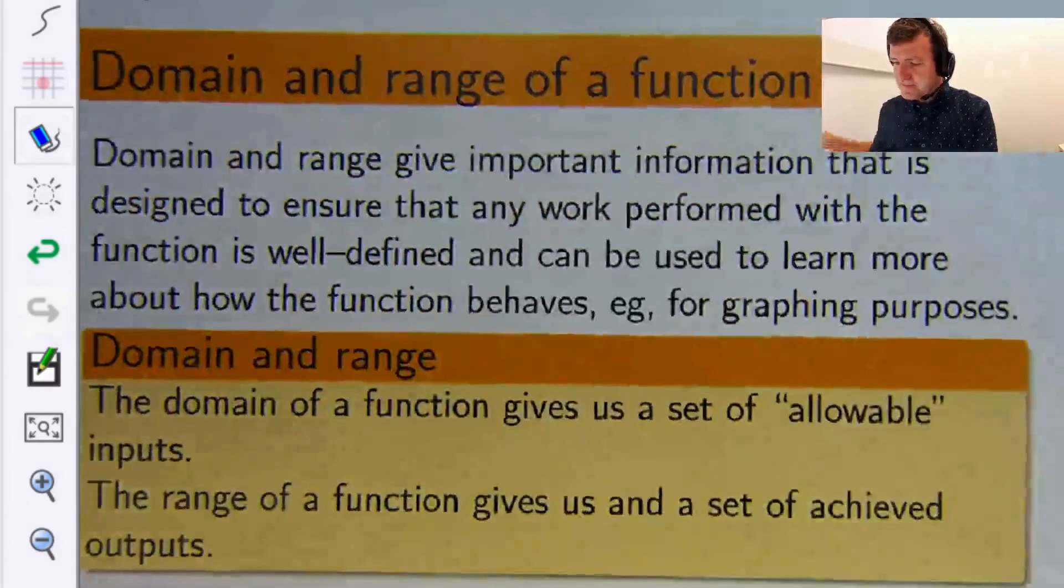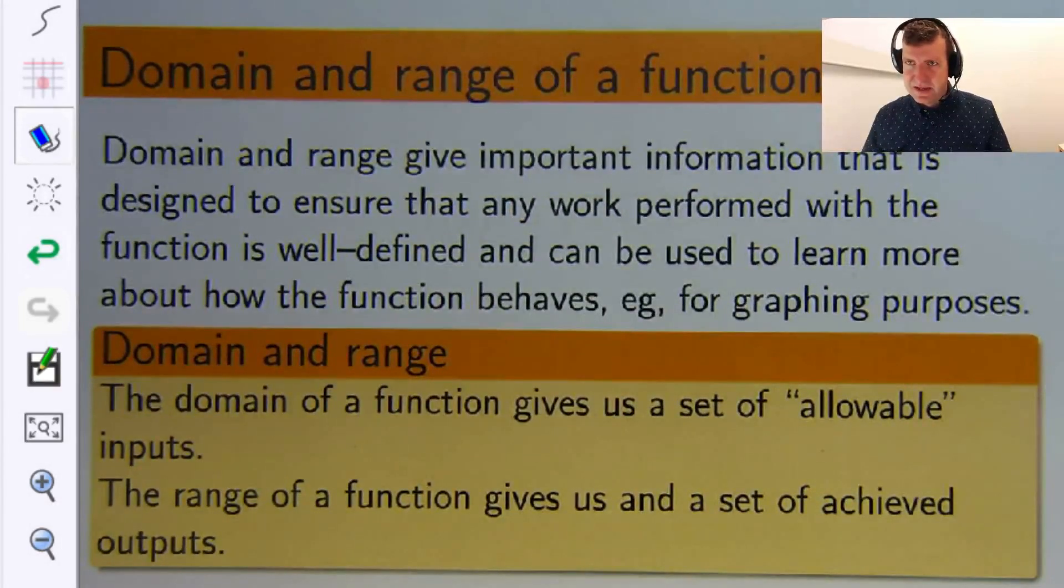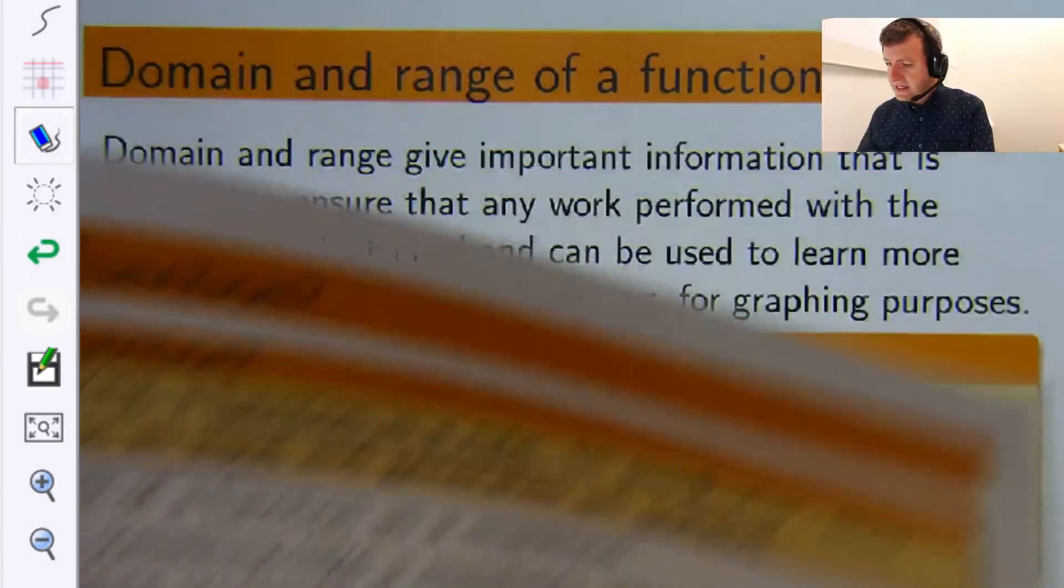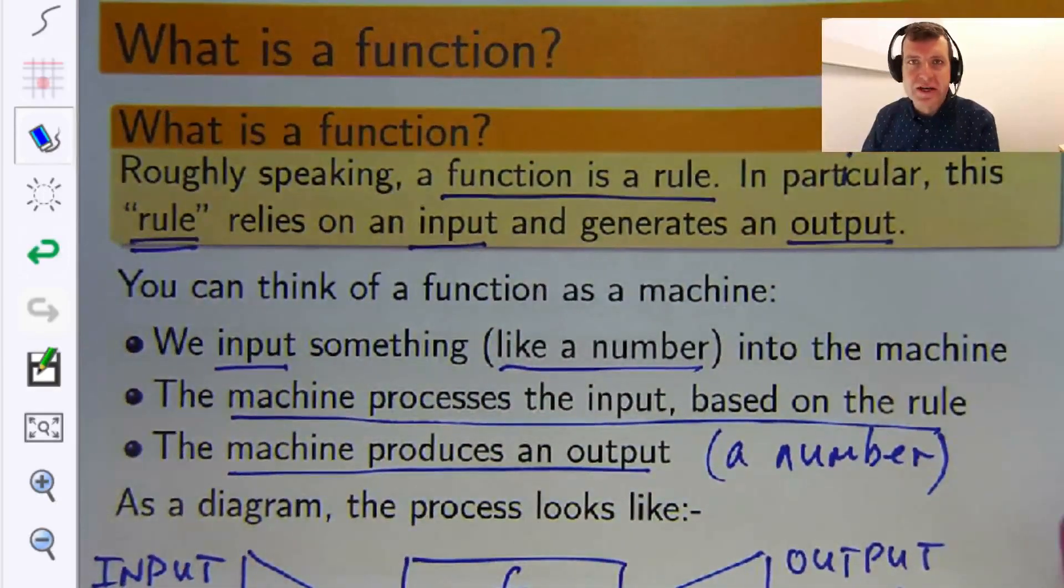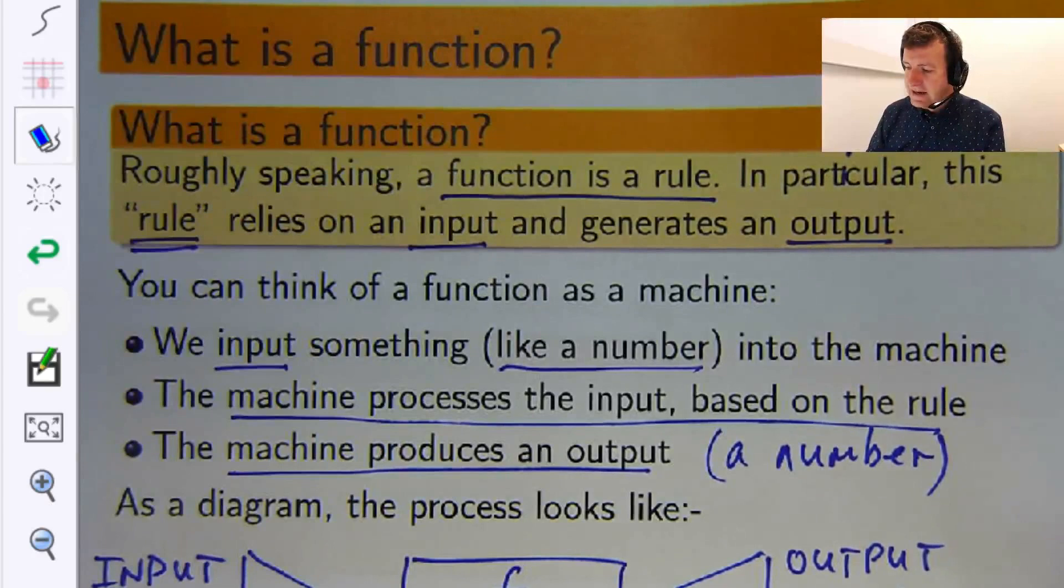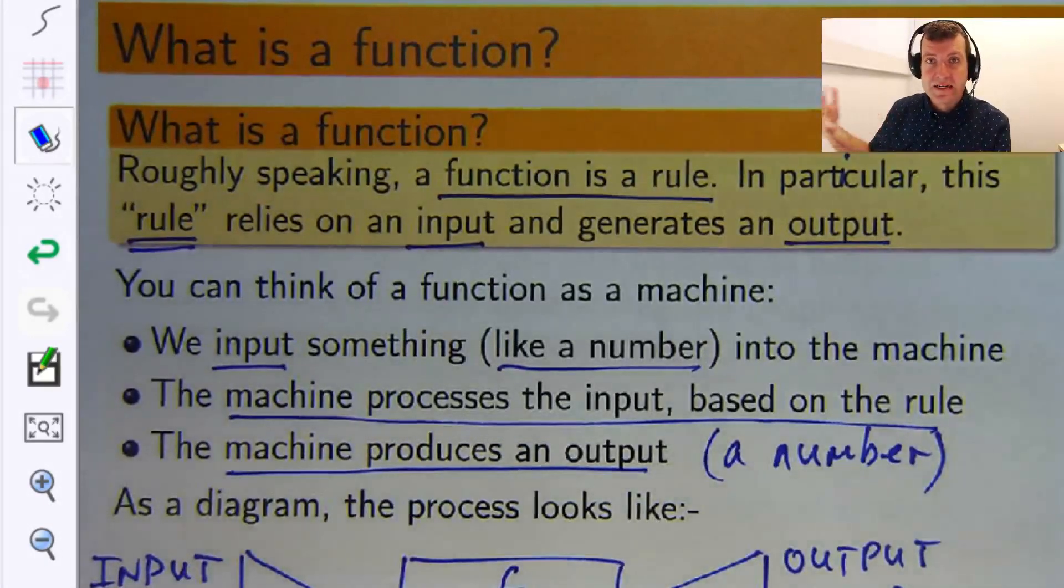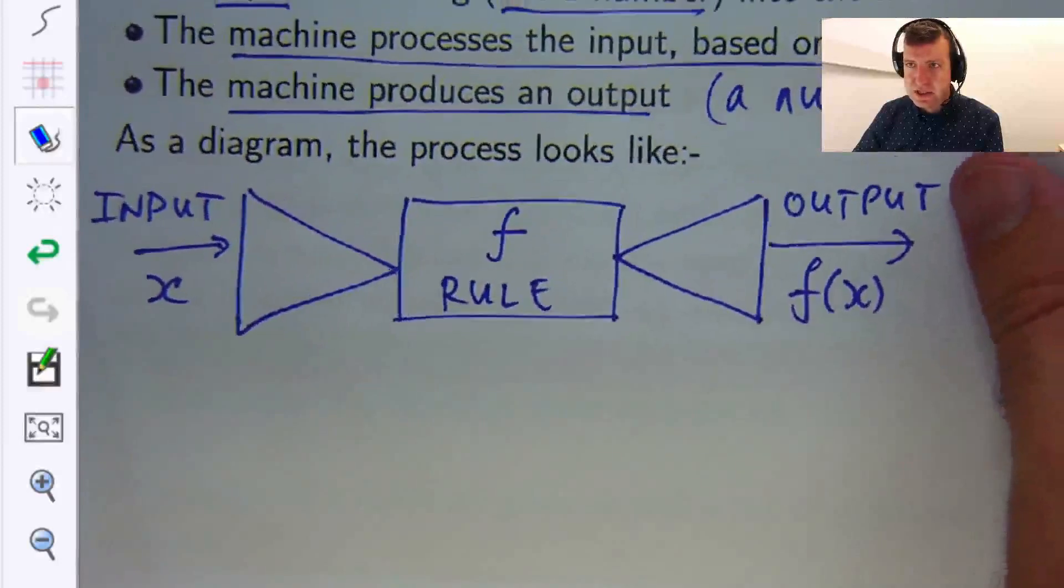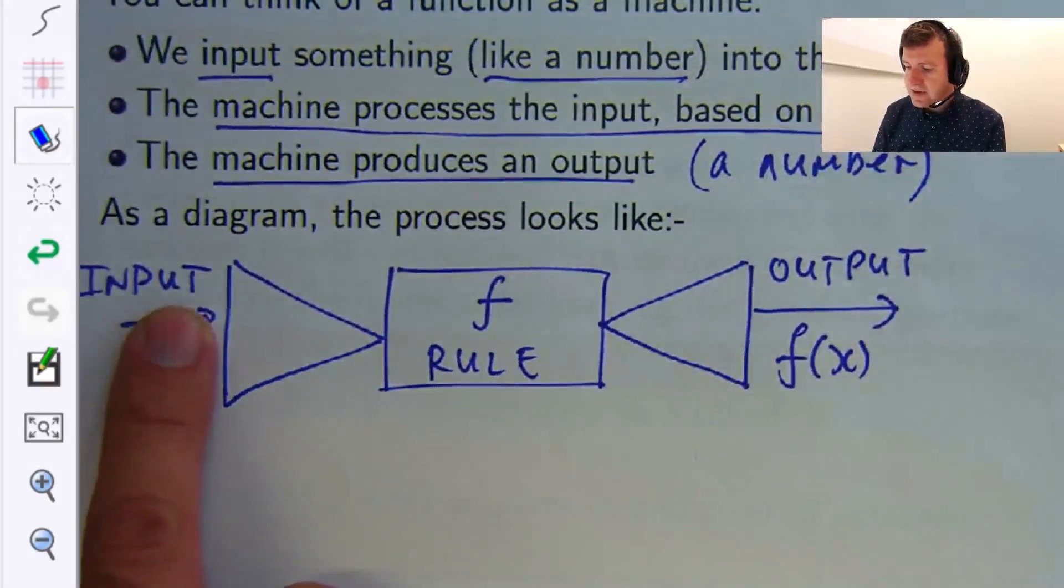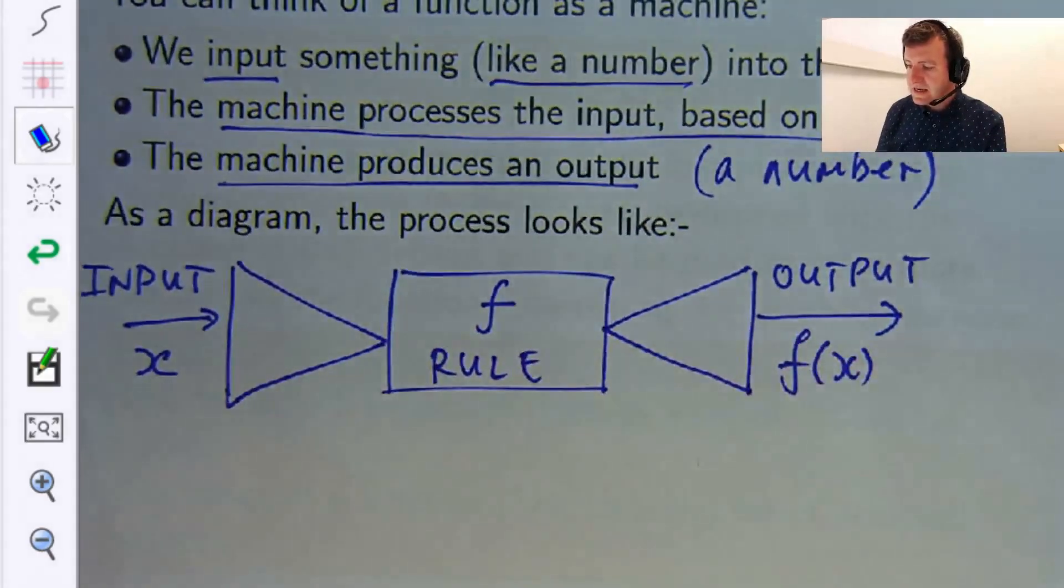Okay, so before I give you this slide, let's just remind ourselves what a function is. A function is a bit like a rule. You input something into the function, it processes that input according to the rule, and you get an output. If you think of the function as a machine, you input a number, the f goes to work according to the rule, and you output another number based on the rule.